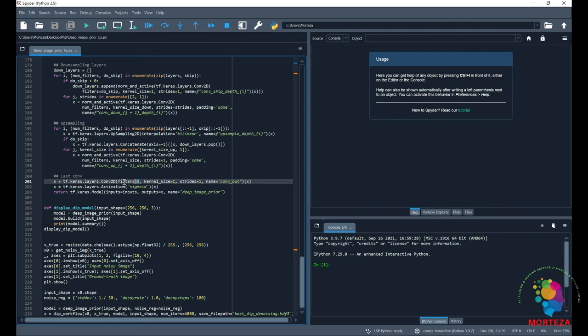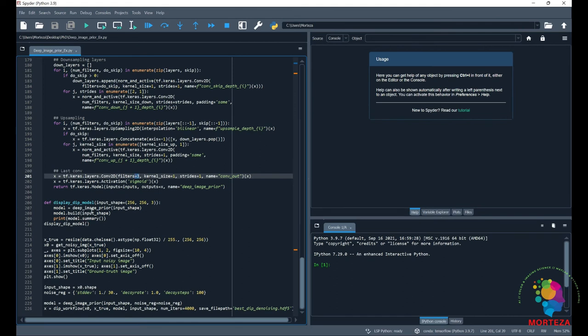which is the number of channels in an RGB image. Hence, only 3 filters in the last convolutional layer. And this is where I showed the model. And as you can see here also is where we input the image, and then we make the noisy image. And this is where the architecture of the network is made.